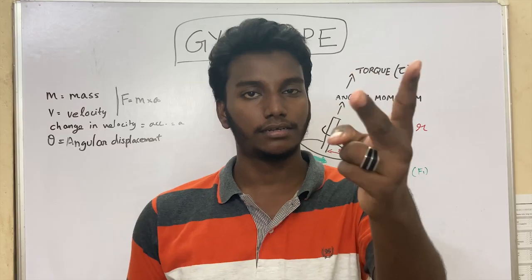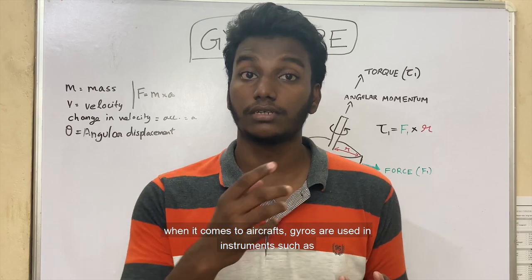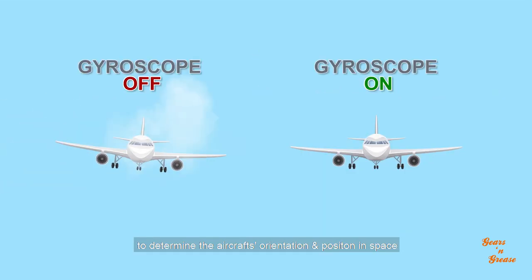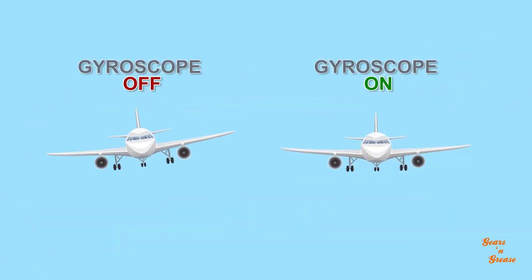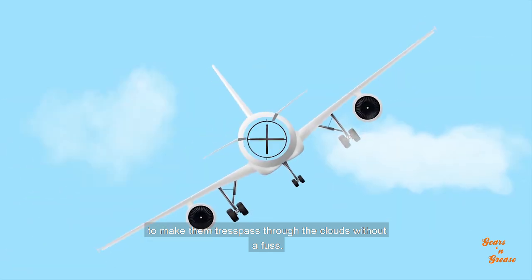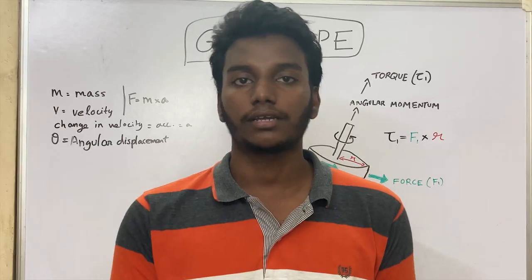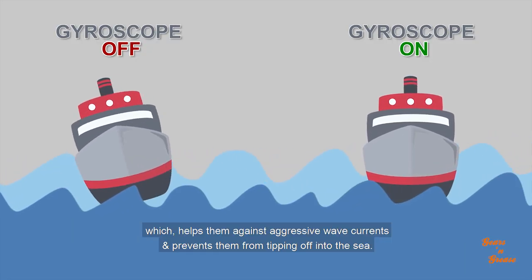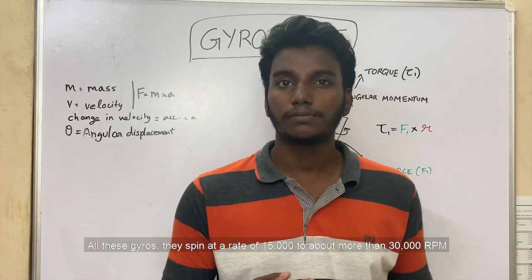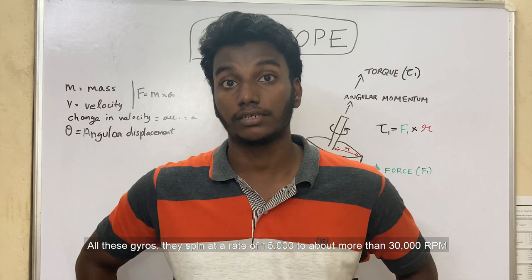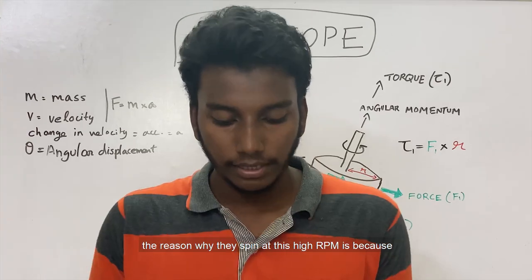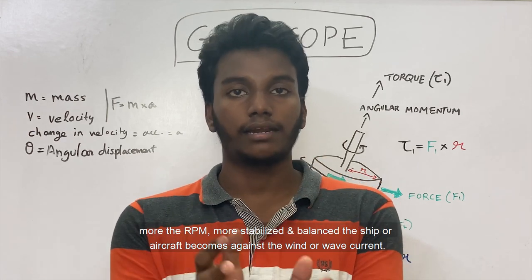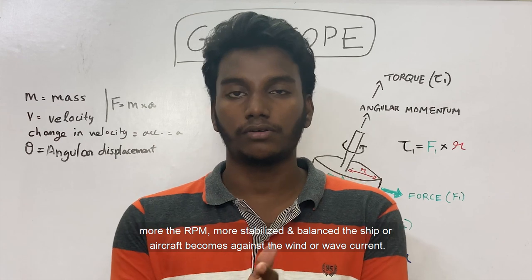The iPhone 4 was the very first smartphone to feature MEMS gyroscope technology — kudos to Apple and Steve Jobs. In aircraft, gyros are used in instruments such as altimeters, vertical speed indicators, and airspeed indicators to determine the aircraft's orientation and position in space, even through clouds. Similarly, gyros are used in ships to help them resist aggressive wave currents and prevent them from tipping into the sea. These gyros typically spin at rates of 15,000 to over 30,000 RPM — the higher the RPM, the more stable and balanced the aircraft or ship becomes against wind or wave currents.